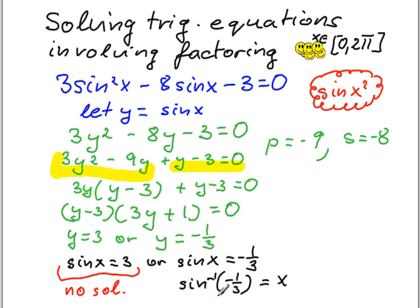Sin negative is in the second, sorry, fourth and third quadrant. So you're either going to be here somewhere or you will end up in quadrant number 4.